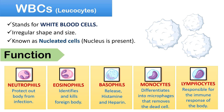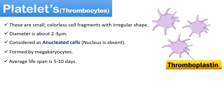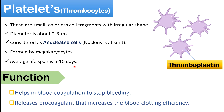Platelets are small, colorless cell fragments with an irregular shape, also known as thrombocytes. The diameter of platelets is about 2 to 3 micrometers. Platelets are considered anucleated cells because of the absence of a nucleus. They are formed in bone marrow by segmentation of the cytoplasm of cells known as megakaryocytes. The average lifespan of platelets is about 5 to 10 days, and their formation is regulated by thromboplastin hormone produced by the kidney and liver.